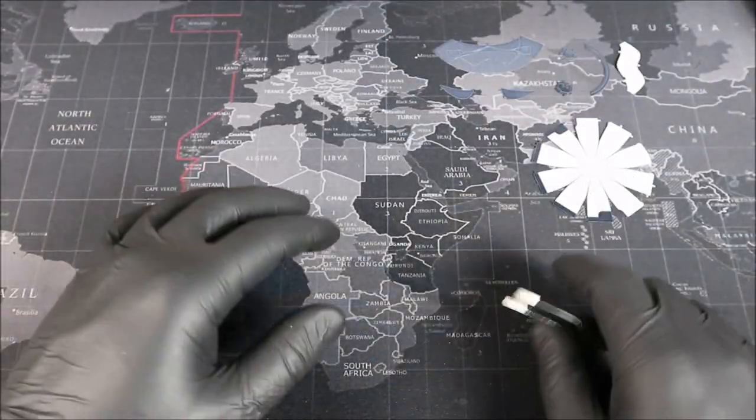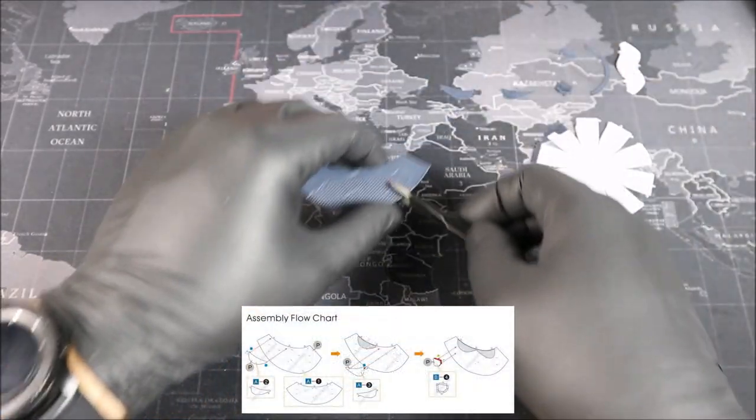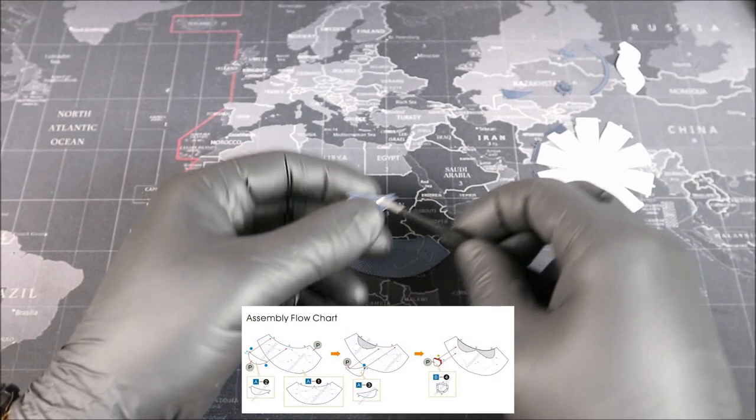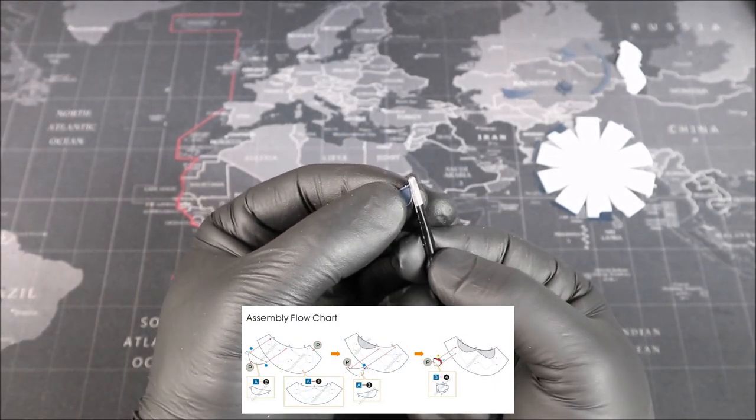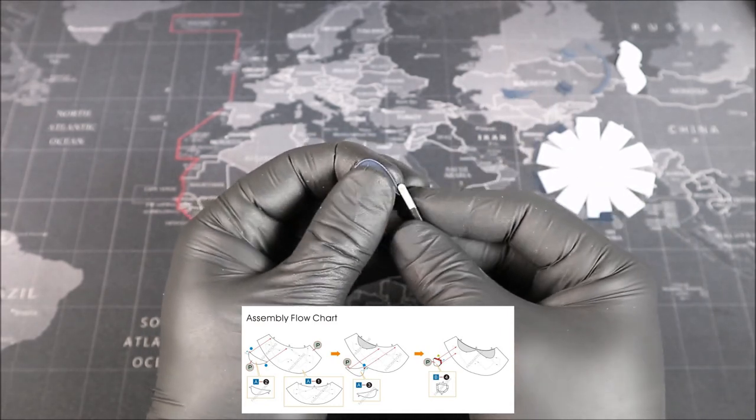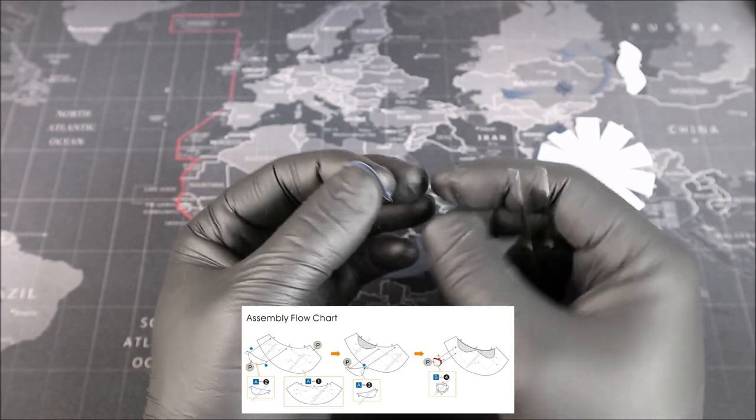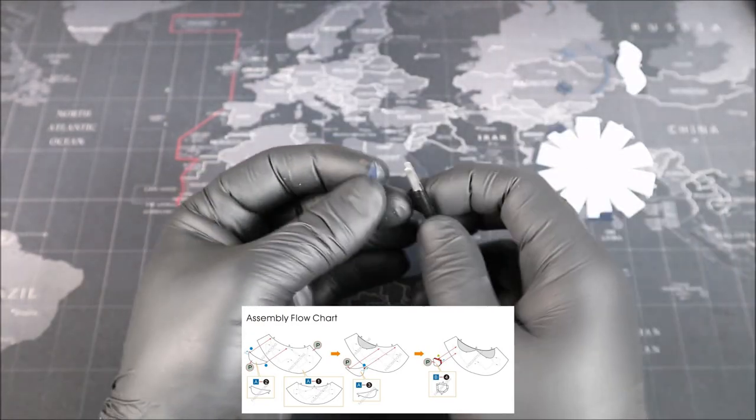And just like that, we have all of our parts needed for our first page. Now starting with part number one here, we're going to grab parts two and three and just take these tabs and bend them over. Very simply, just like this. Okay, right on. There's our first piece done.